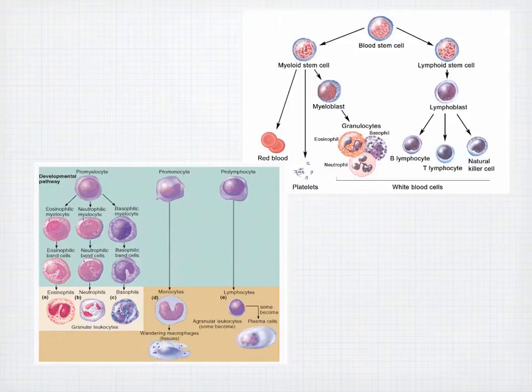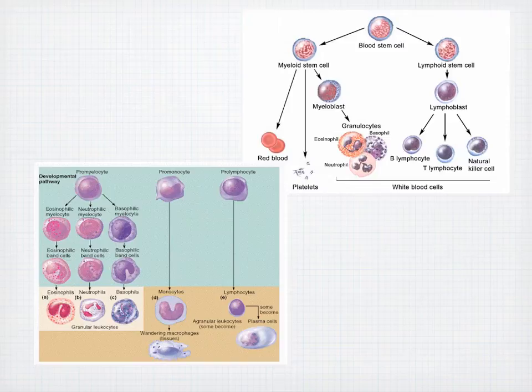Starting with the blood stem cell at the top right and going down to red blood cells, platelets, granulocytes, and agranulocytes — these are the individual cell lines from our stem cell. In the colored picture in the lower left corner, we see the promyelocyte leading to different myelocytes, then band cells, and all the way down to granular leukocytes — a pictorial representation of where the band cell falls.